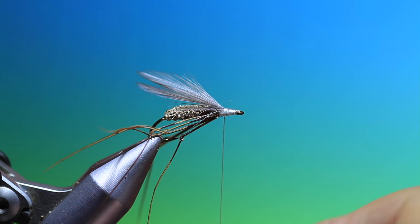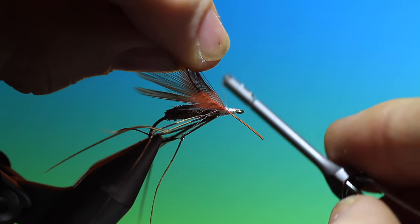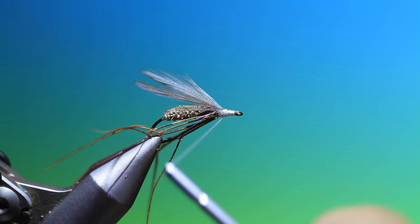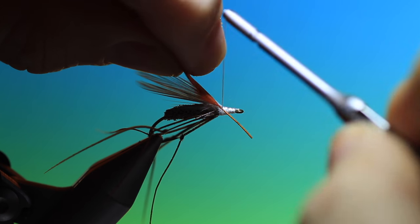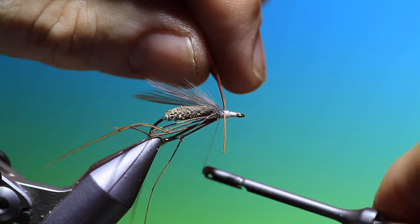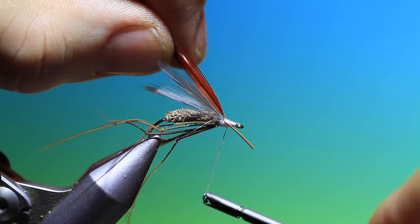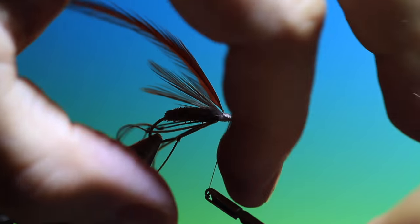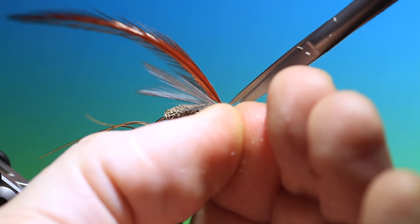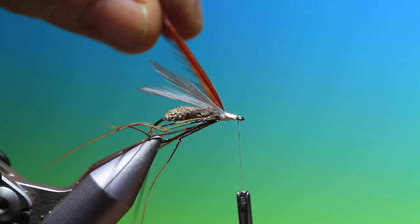Then I need a brown or red coachman hackle. Again a lot of people use furnace or badger. I want this to go in. I'll spin that. Get a nice profile right into the wing. There. I want this at 90 degrees. I'll just tie down the end. Like so. Trim that off.